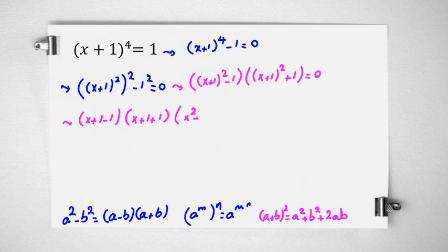It will be x squared plus 2x plus 1 plus 1 equals 0. So we have product of 3 terms equal to 0. So the first term is 0 or second term or third term.